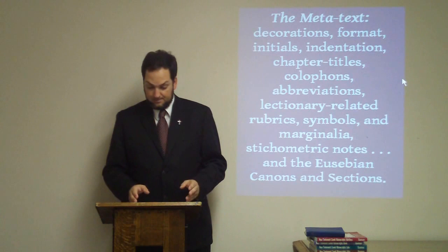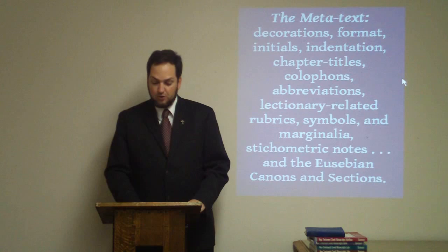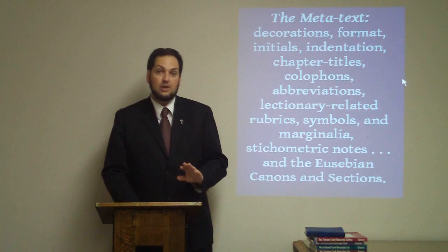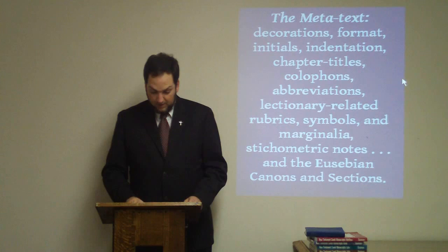The Eusebian Canons are a meta-textual feature found in many manuscripts. We are used to using the term canon to refer to the standard collection of authoritative books in the Bible. The Eusebian Canons are something else. They are not a list of books. They are basically lists of parallel passages in the four Gospels. Before we can understand the Eusebian Canons and sections, another subject must be introduced: Greek numerals.